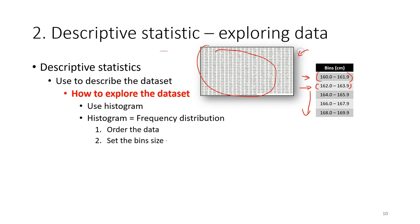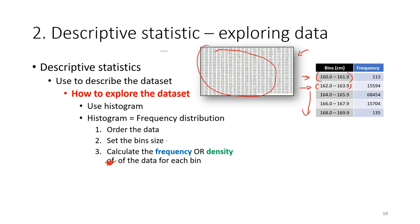The next step is to calculate the frequency or density of the data for each bin. Here I have 100,000 observations, so I calculate the frequency — how many observations fall inside the bin from 160 to 161.9 — and we simply count the frequency.